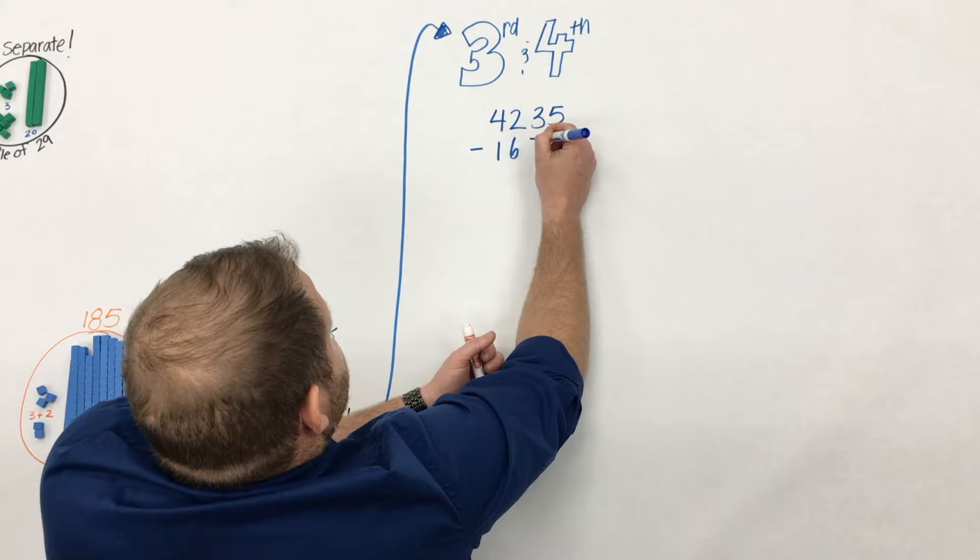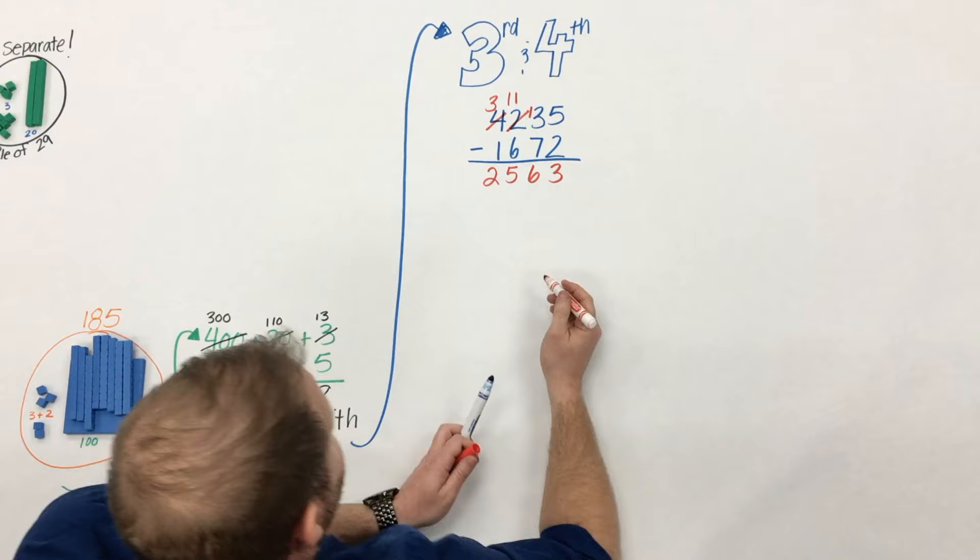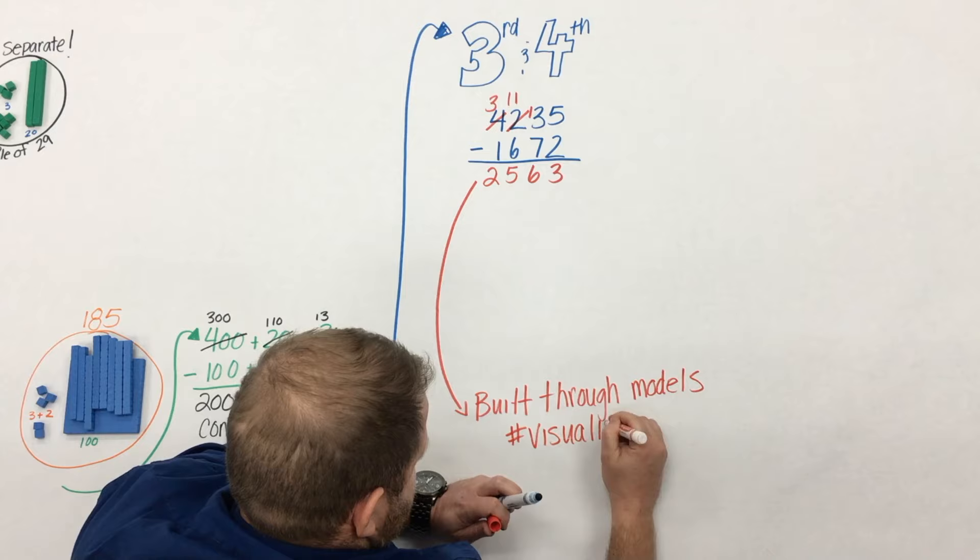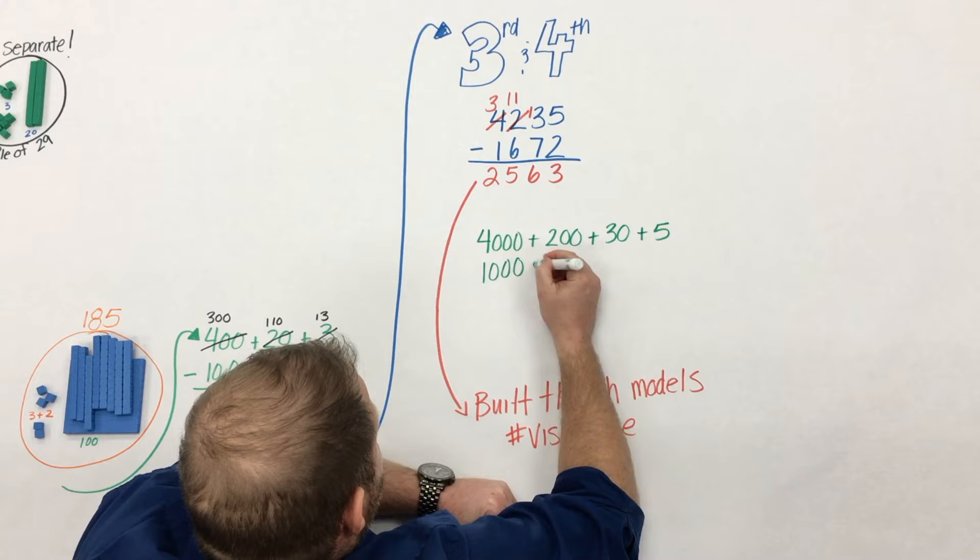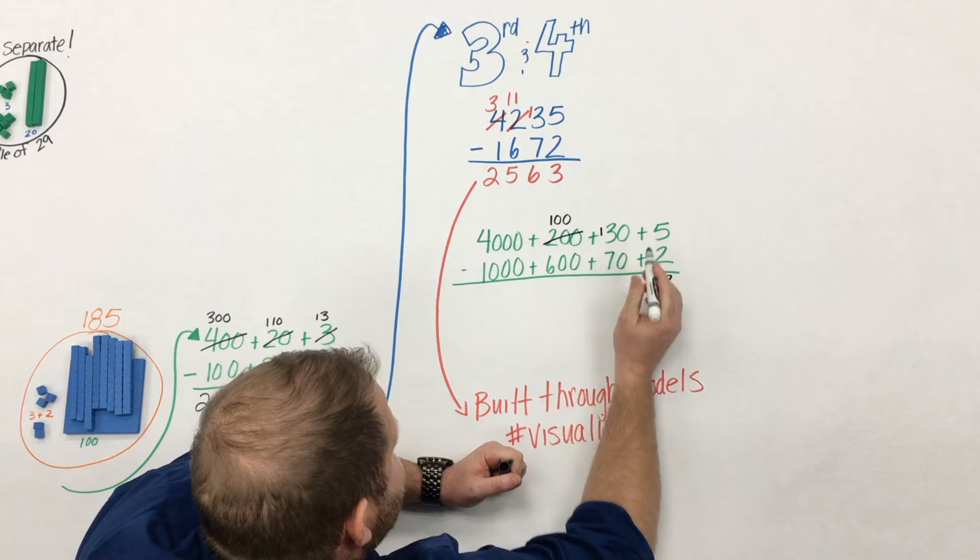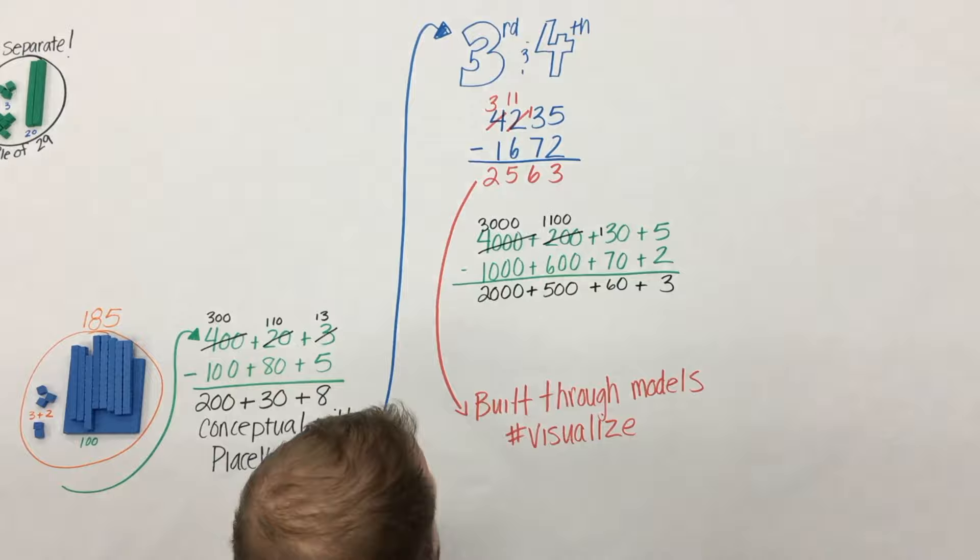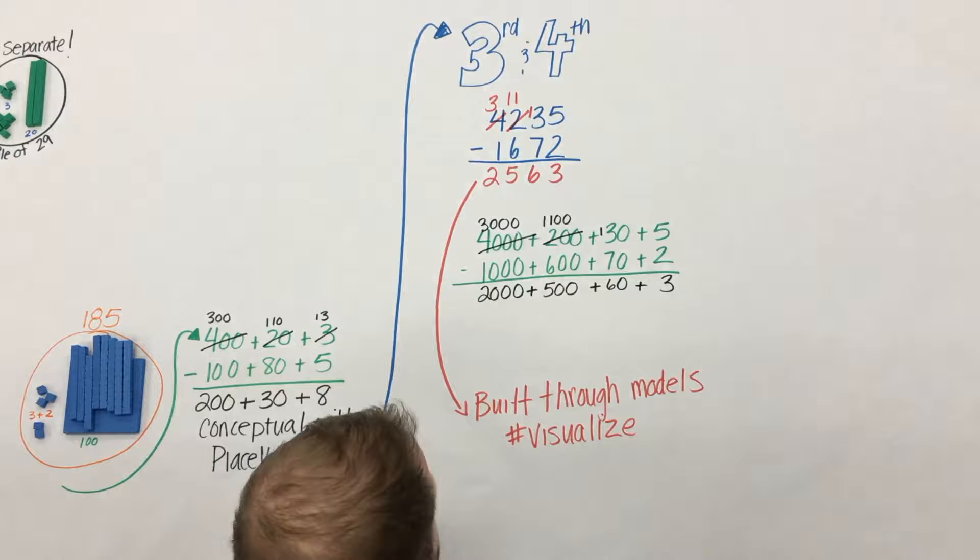As students dive into third and fourth grade they have two years to begin to formalize this understanding of subtraction and addition with regrouping and unitizing. But the big thing is that it's built through conceptual understanding. The standard algorithm isn't an expectation until the end of fourth grade, right before students dive into decimals with fifth grade. And you know what, in third and fourth grade if students need to use expanded form to make sense of what they're doing, let them do it. It's all about the conceptual understanding and allowing students to visualize the math.